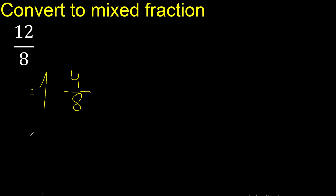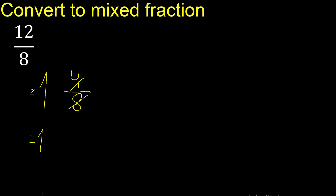Simplify because it can be divided by the same number — divided by 2. 4 divided by 2 is 2, 8 divided by 2 is 4. Divided by 2 is 1, divided by 2 is 2. Finish.